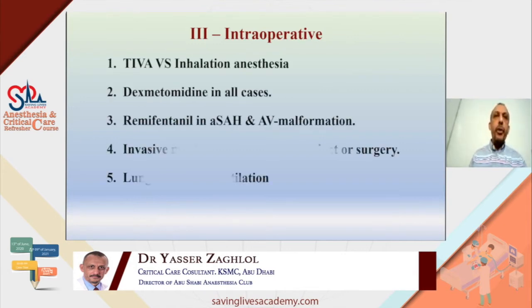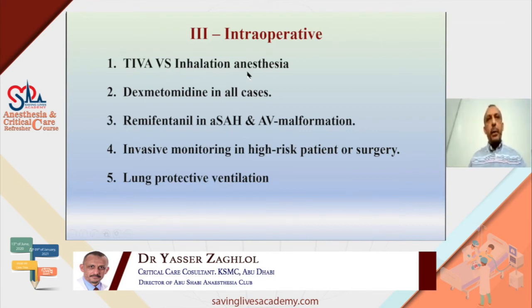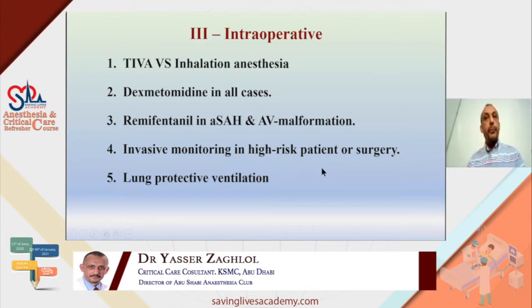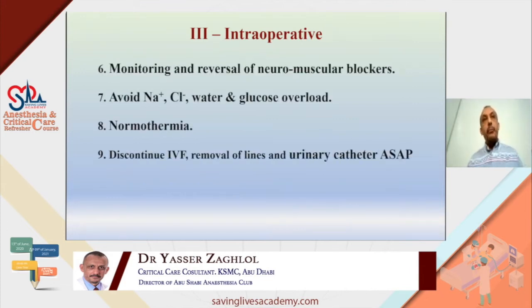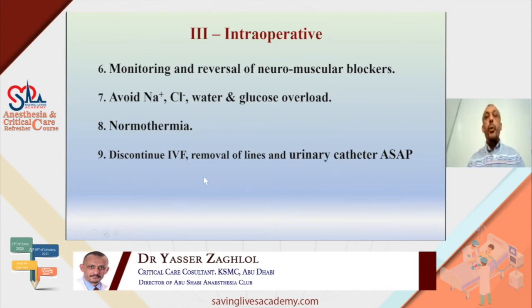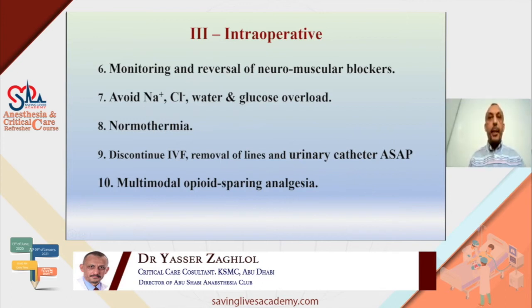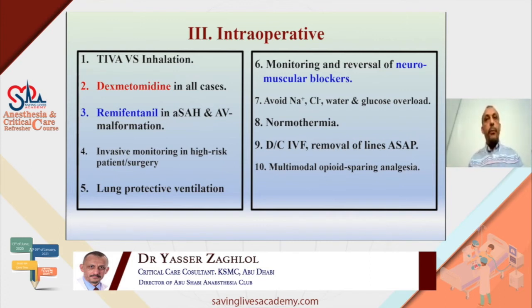For intraoperative management, I have 10 points: use TIVA or inhalational anesthesia, use dexmedetomidine in all cases, remifentanil in subarachnoid hemorrhage or AVM, invasive monitoring according to patient and surgical risk, lung protective ventilation, monitoring and reversal of neuromuscular blockers, avoid overload of sodium, chloride, water, and glucose, normothermia, early discontinuation of IV fluids and removal of lines, removal of urinary catheter as soon as possible, and multimodal opioid-sparing analgesia. I will discuss some of these points.